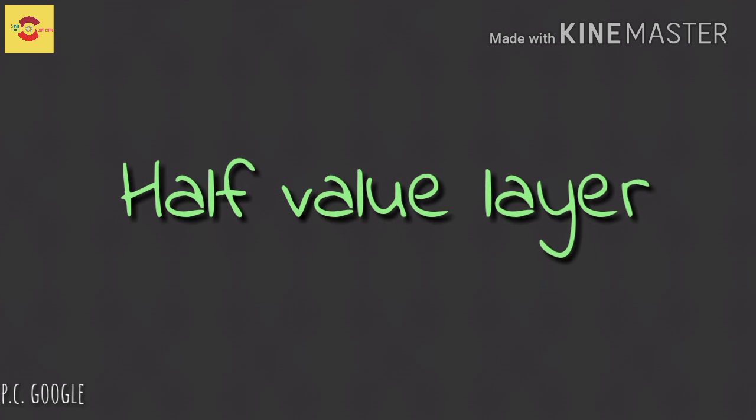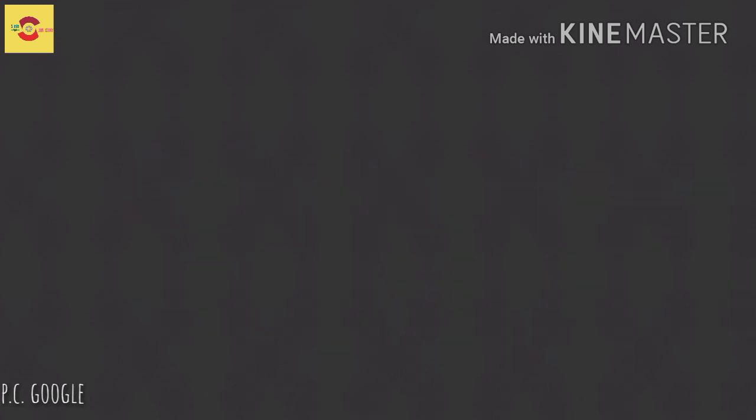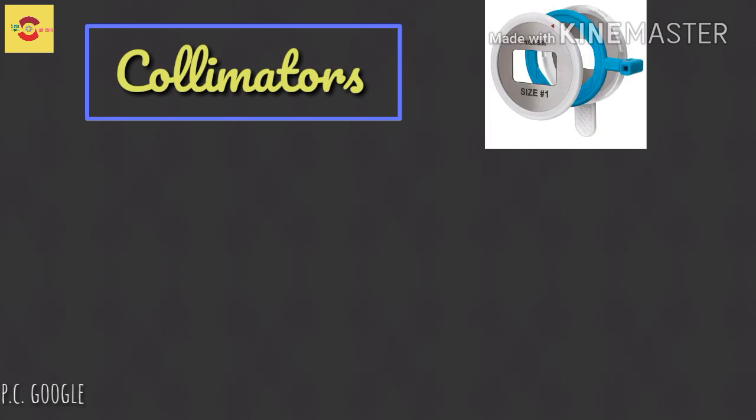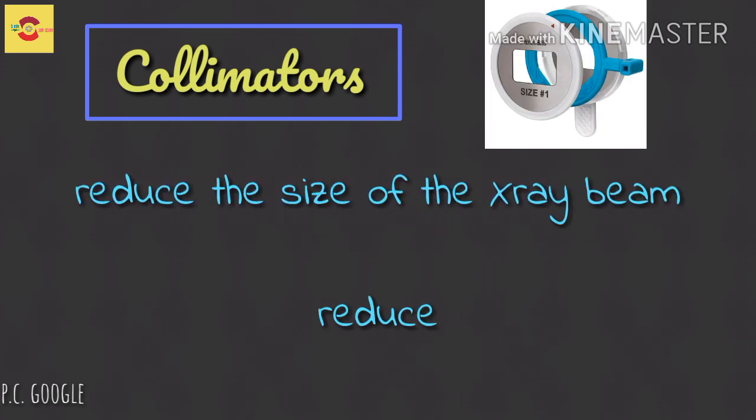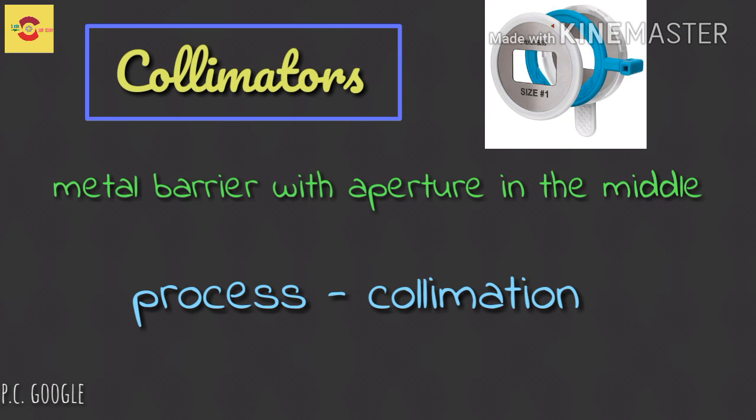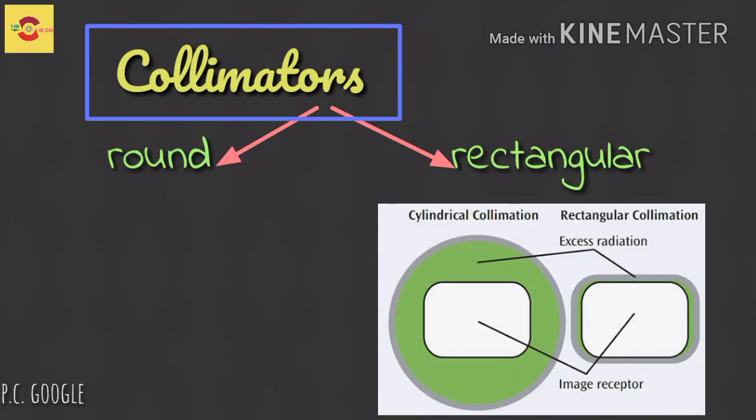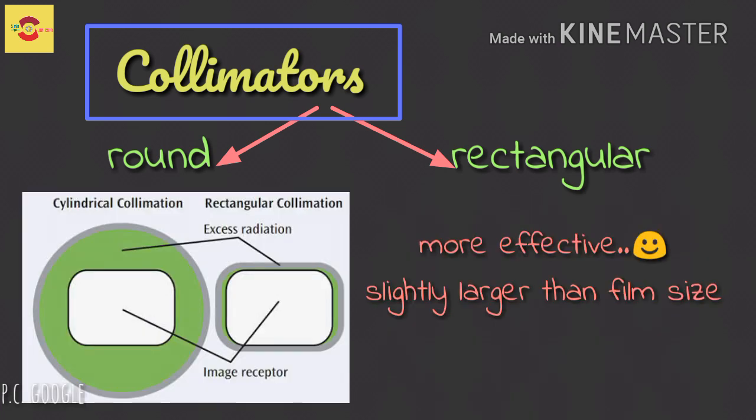What is a collimator? They restrict the size of the x-ray beam and reduce the volume of tissue irradiated. The process is called collimation. A collimator is a metal barrier with an aperture in the middle. Collimators are usually round or rectangular. A round collimator is usually a metal disc with 7 centimeter aperture diameter, and a rectangular collimator is usually more effective because it is slightly larger than the film size.